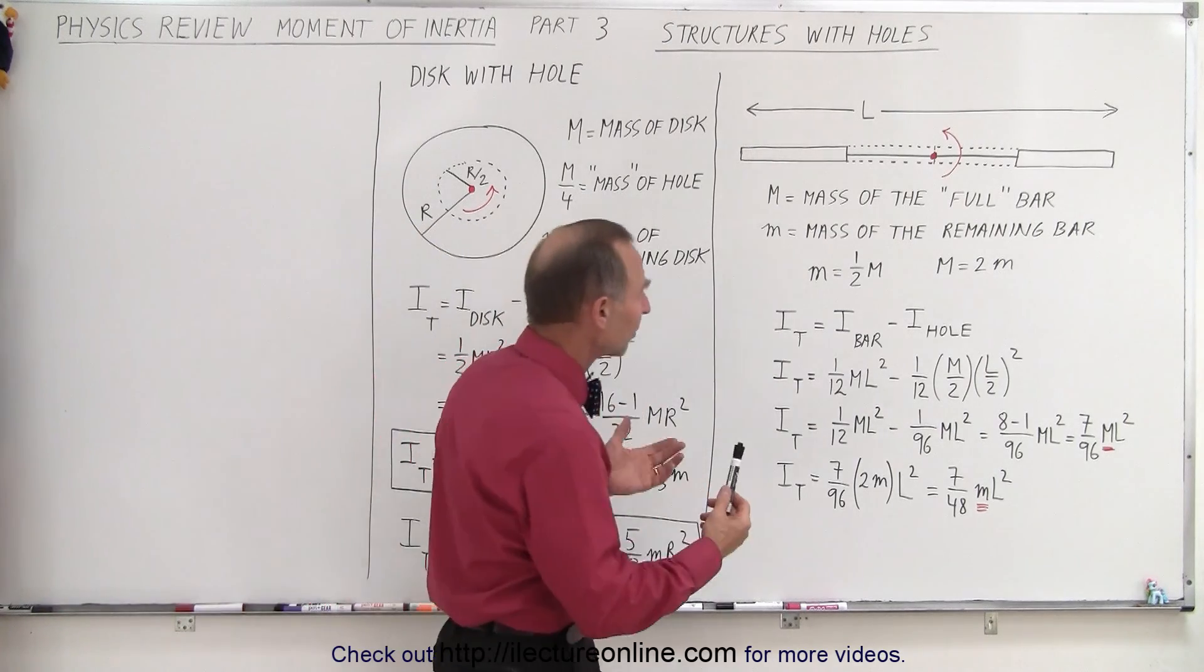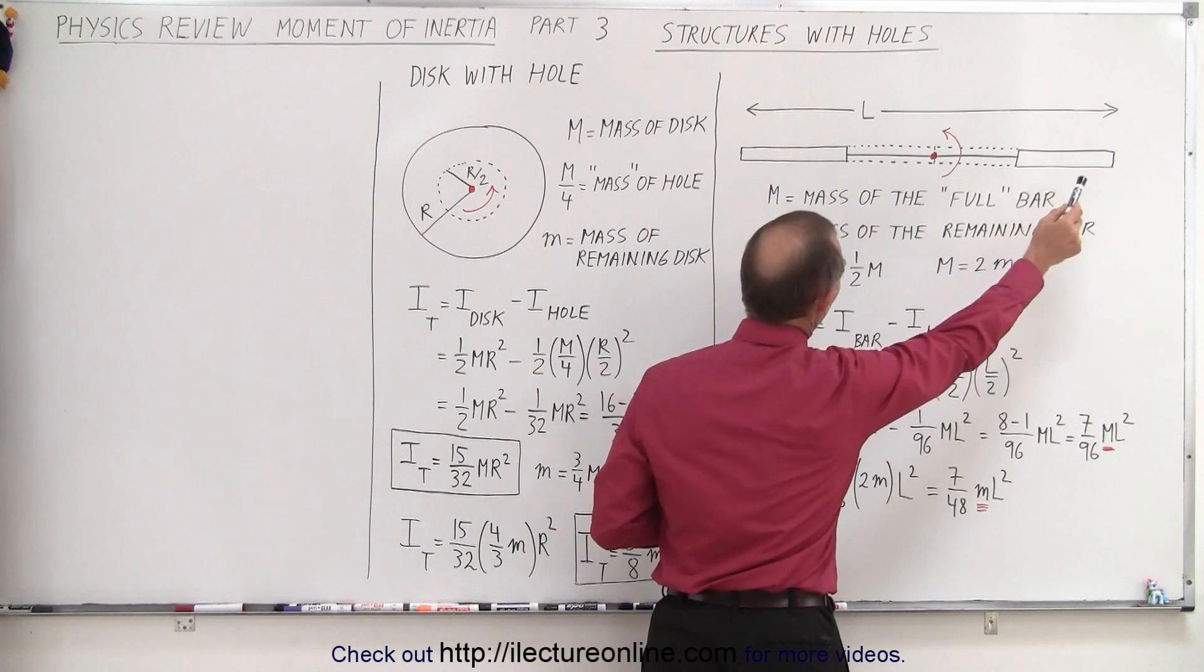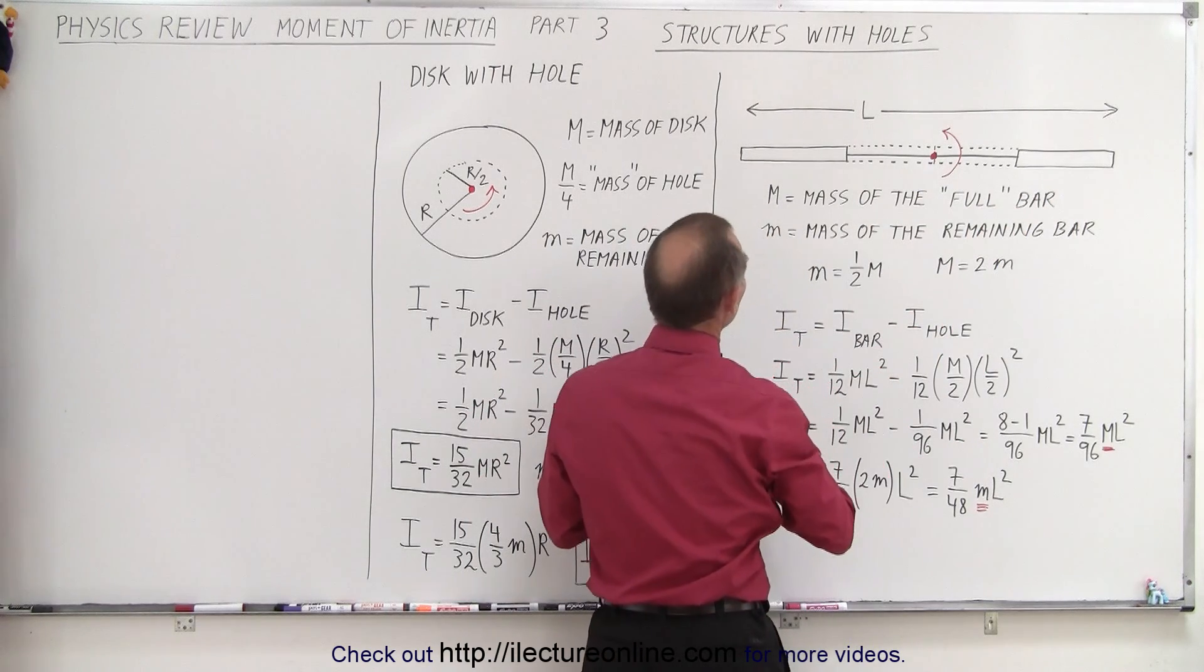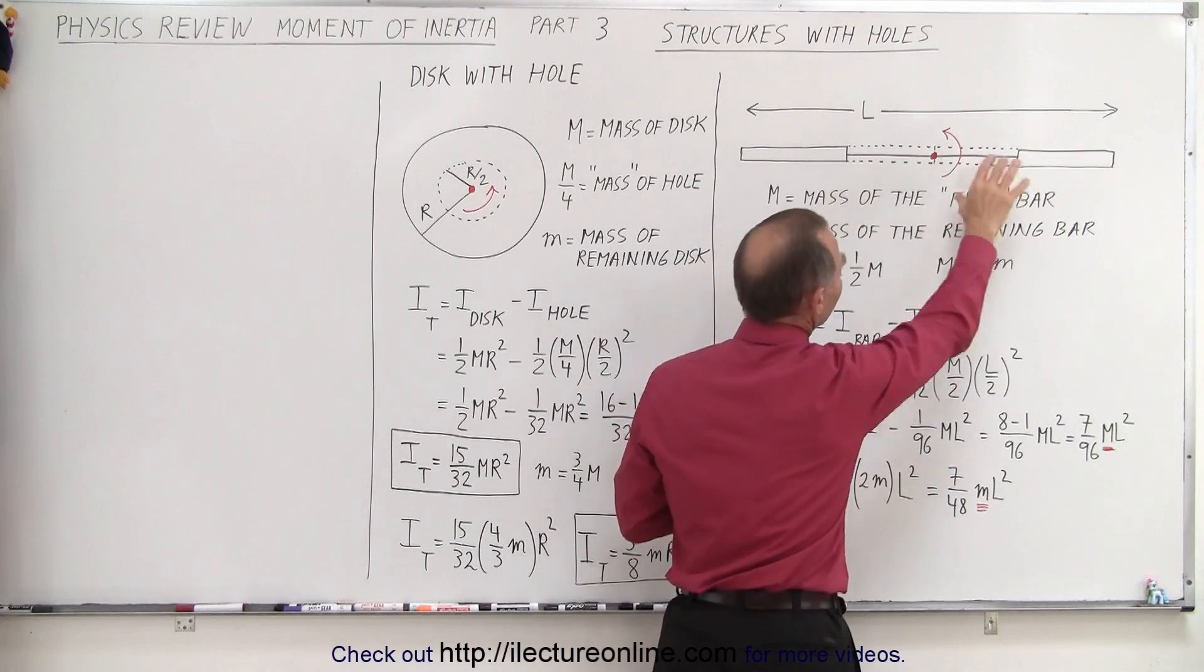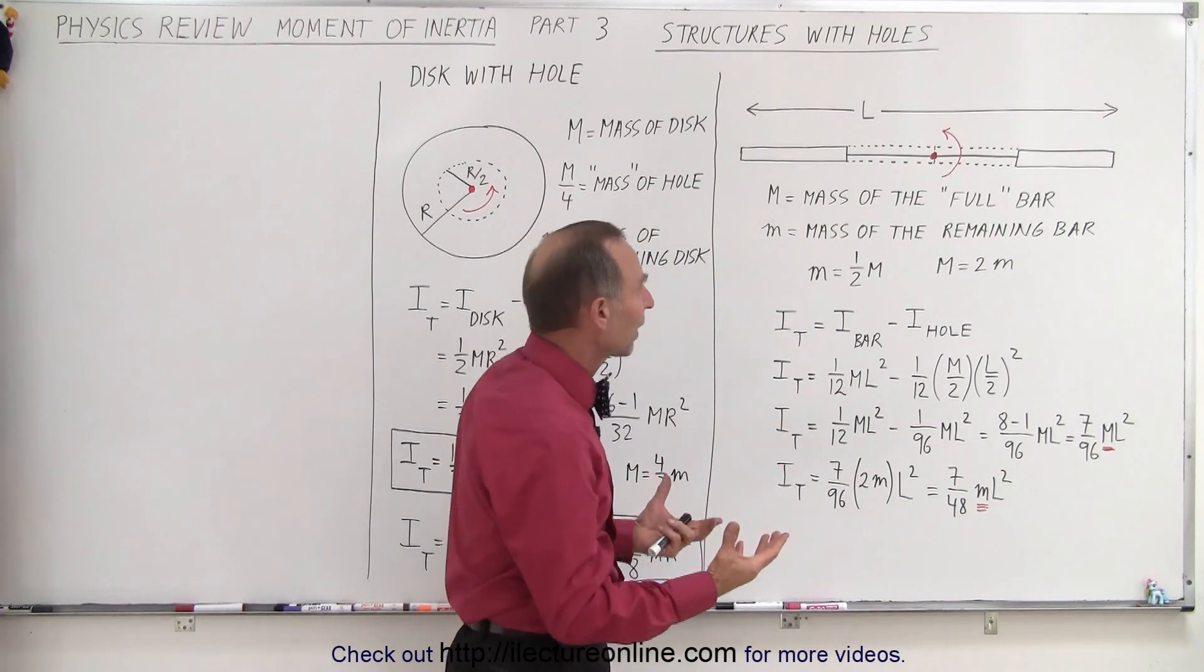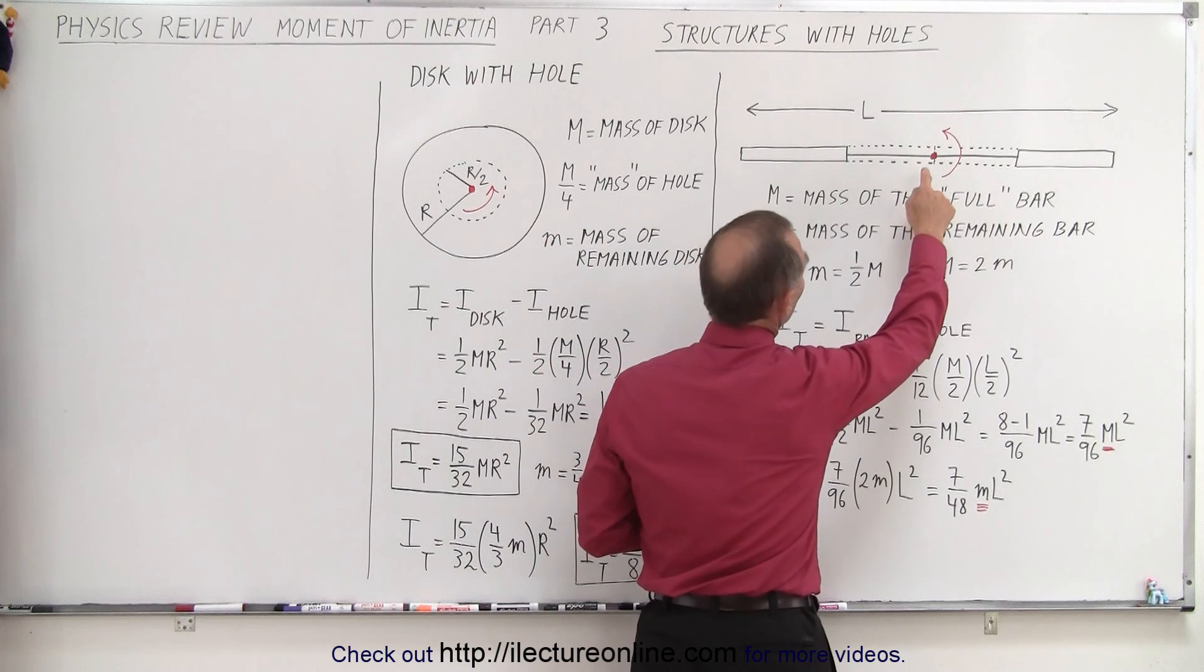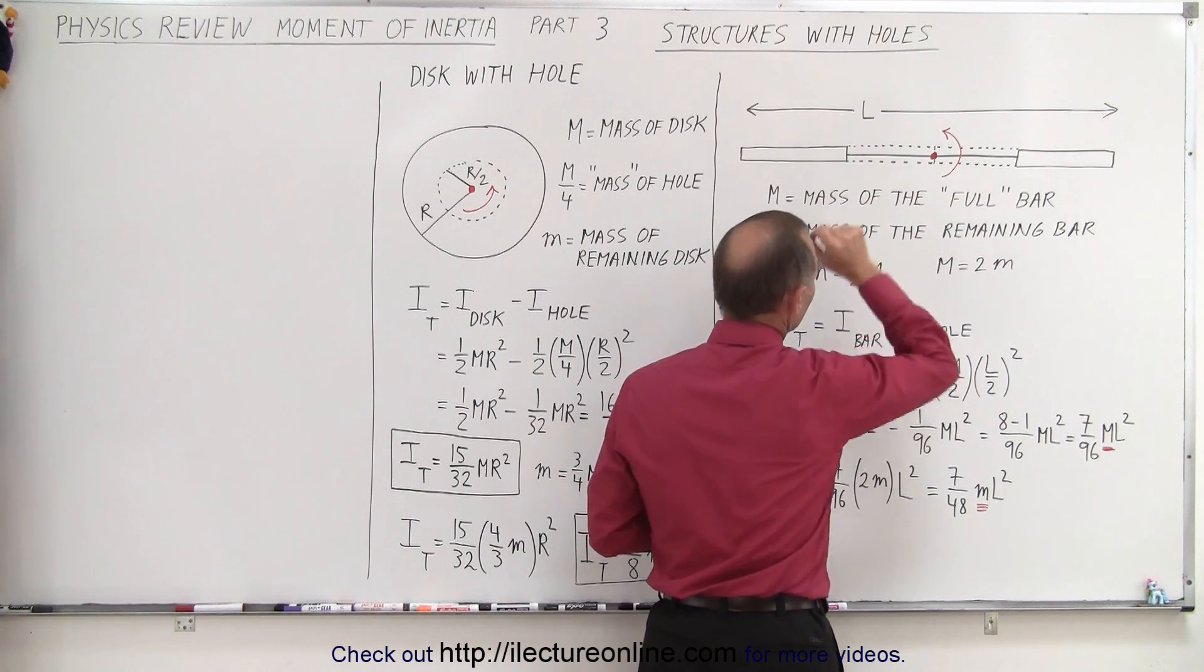So first, let's use a rather simple example. Let's use a bar of length L that has total mass M. So M is the mass of the full bar as if there's nothing missing. The moment of inertia of that, of course, would be 1/12 ML squared.